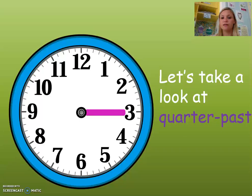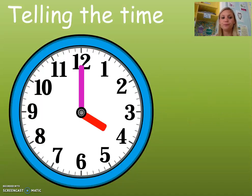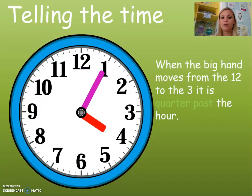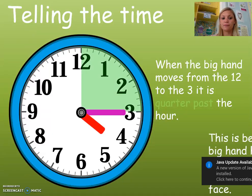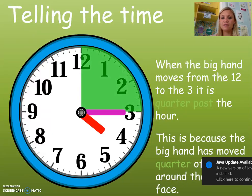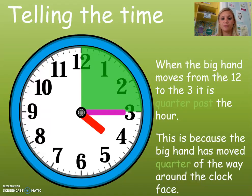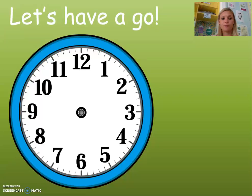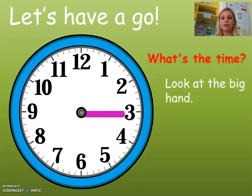We're going to move on and take a look at quarter past. When the big hand moves from the 12 to the 3, it is quarter past the hour. This is because the big hand has moved a quarter of the way around the face. So, look at the big hand — it's on the 3, so we know it's quarter past.